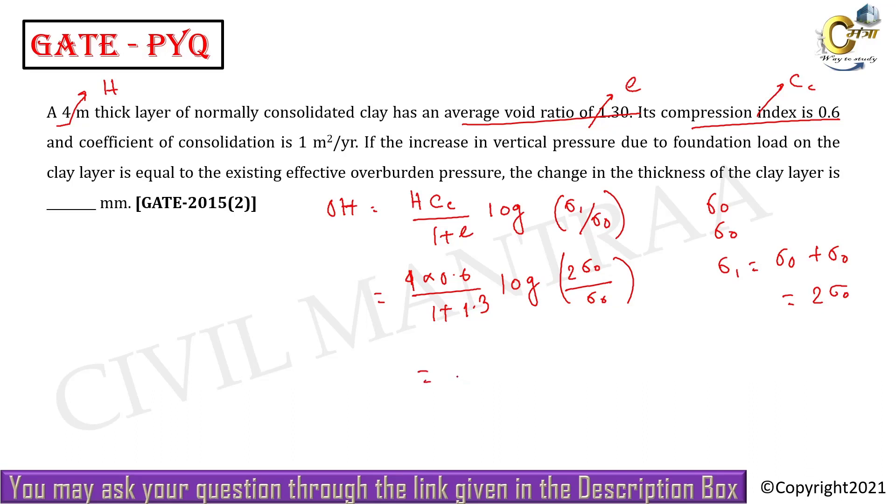314 millimeter. So this answer is 314 millimeter, vertical pressure due to the foundation load on the clay layer is equal to the existing overburden pressure.